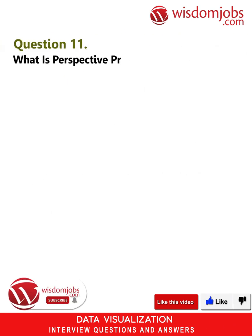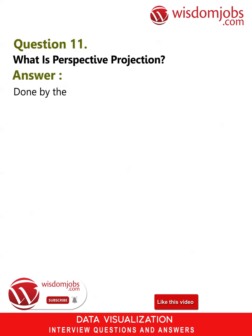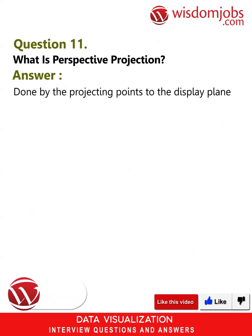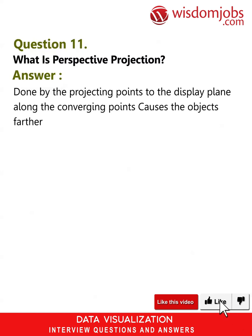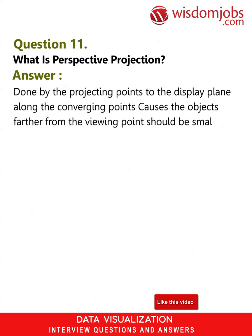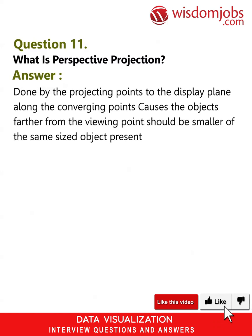Question 11: What is perspective projection? Answer: Perspective projection is done by projecting points to the display plane along converging lines. This causes objects farther from the viewing point to appear smaller than the same-sized objects placed closer.